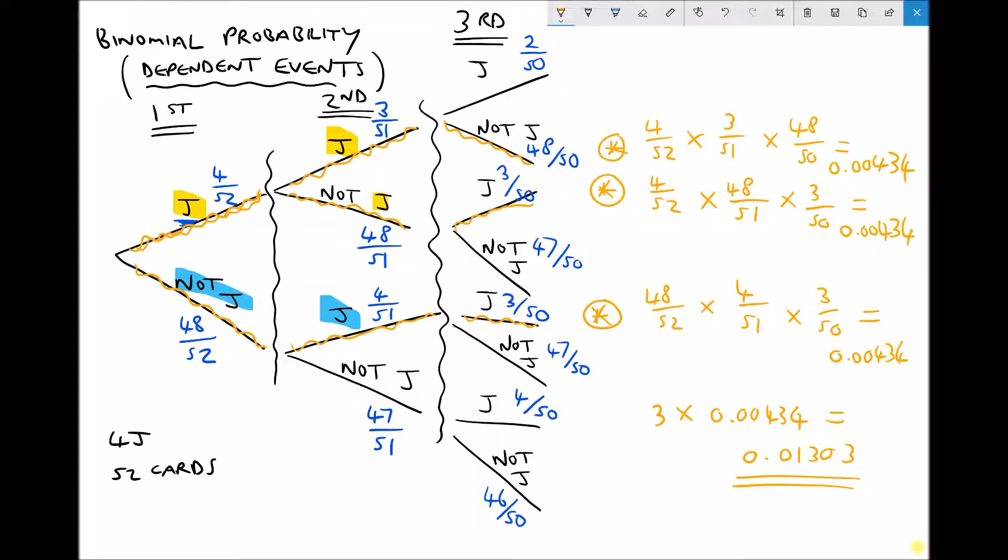Now the reason why we can't apply the binomial formula to this problem is because the likelihood of a success changes after each subsequent event. So whilst the tree diagram can still be used, we're not able to use our binomial formula.